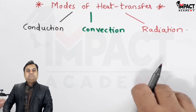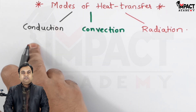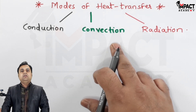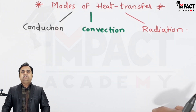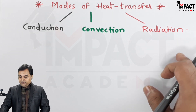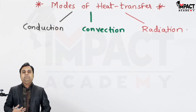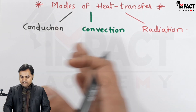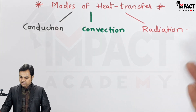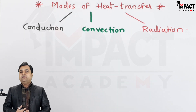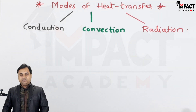Basically there are three modes of heat transfer: conduction, convection, and radiation. Conduction takes place in case of solids. Convection requires at least one medium to be fluid — and fluid means not only liquids but also air or gases. Radiation heat transfer does not require any medium for heat flow, whereas conduction and convection require some medium like solids, liquids, air, or gases.